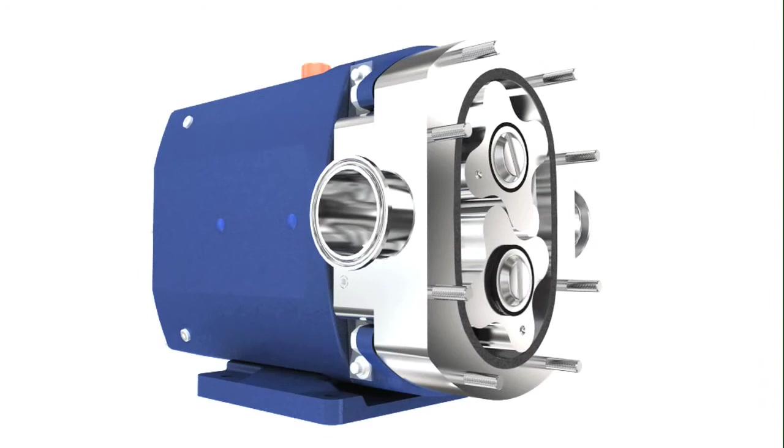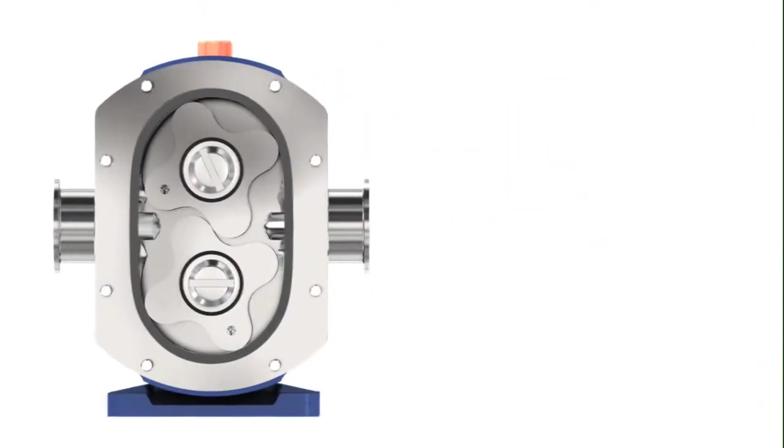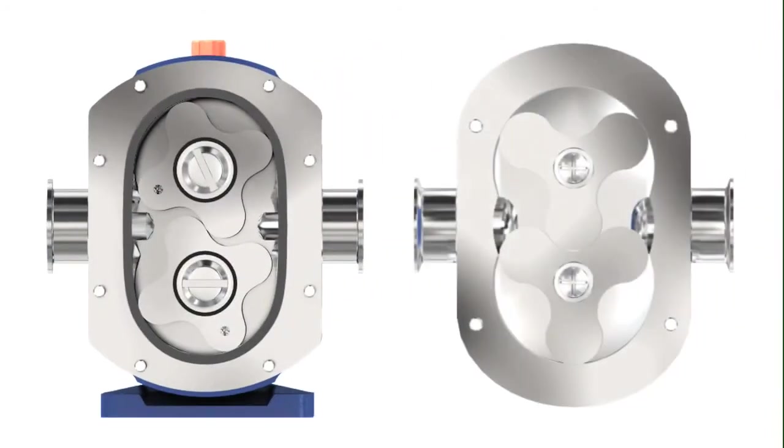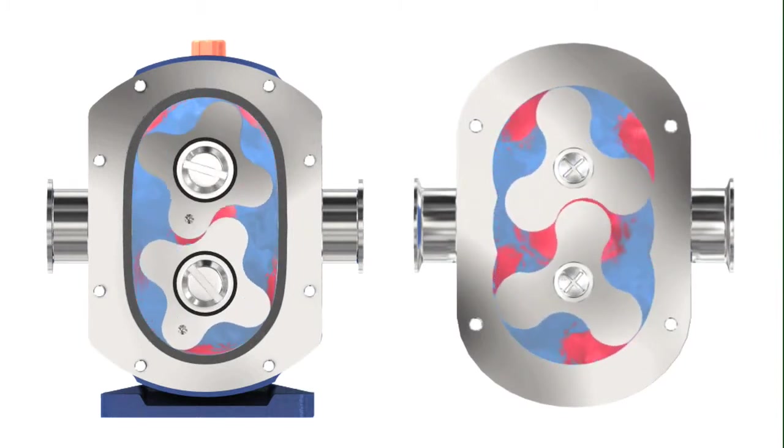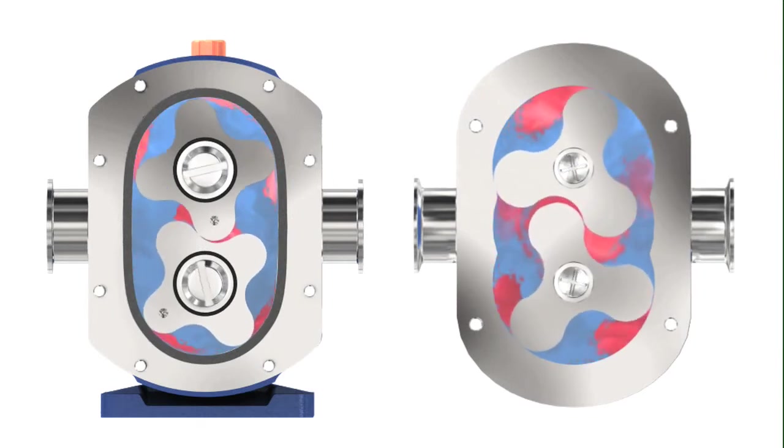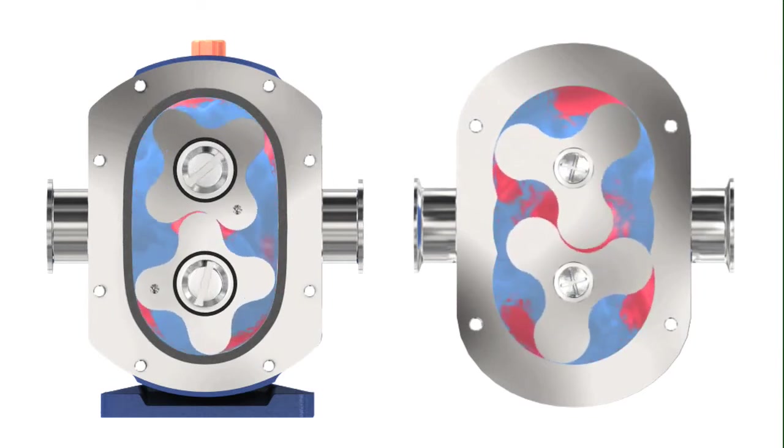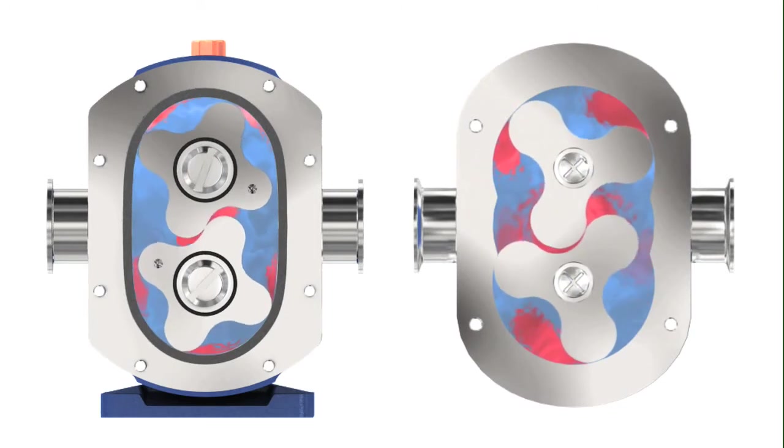To ensure exceptional product handling of shear-sensitive liquids, the SX incorporates close clearances to minimize product slip. The four-lobe geometry reduces shear of the liquid as it enters and exits the lobe cavities and also reduces pulsation.